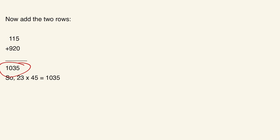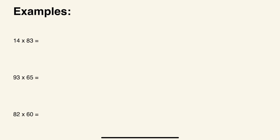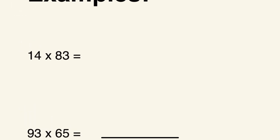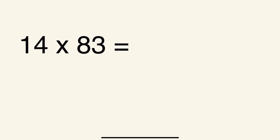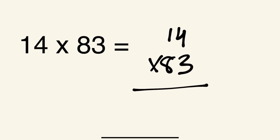I personally prefer the standard algorithm, but if the box method works better for you, go for it — use whatever helps you most. Now let's look at some practice examples. The first example is 14 times 83. We'll use the standard algorithm. Write 14 times 83, then start with the ones digit: 4 times 3 is 12, write down the 2, carry the 1.